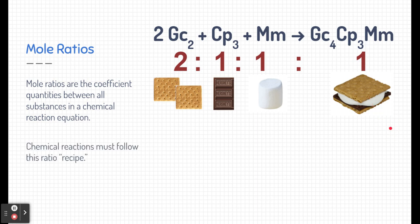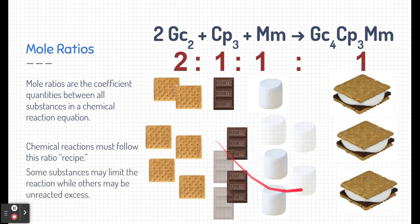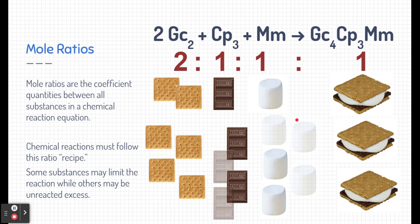Chemical reactions have to follow this ratio. We can scale it up and down all we want. When we add a bunch of different ingredients, some substances may limit our reaction — they limit the quantities — and others might be unreacted excess. For example, our graham crackers are limiting the amount of s'mores we can get. We only have six graham cracker pieces, but we have lots of extra chocolate and marshmallows. Those chocolate and marshmallows are going to be unreacted excess, and our graham cracker squares are going to get all used up. So we're only going to get three s'mores in this process.